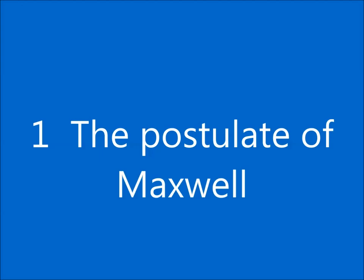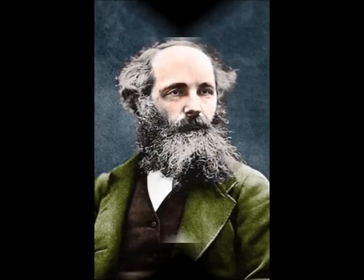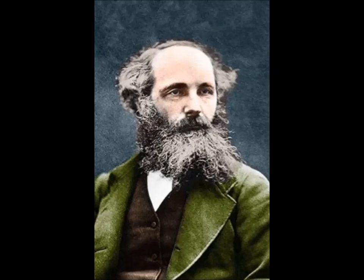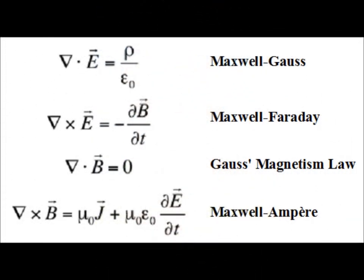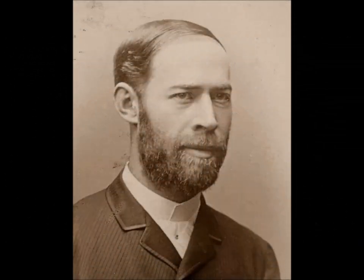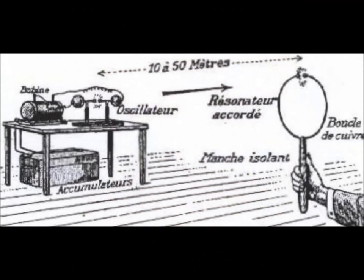The electromagnetic nature of light is a pure postulate of Maxwell. He showed that waves associated with oscillations of electric and magnetic fields propagate in a vacuum at the speed of light. Maxwell immediately thought that light is therefore electromagnetic in itself. In 1887 Hertz discovered the waves emitted by an electric circuit. These waves propagate at the speed of light. He thus confirmed Maxwell's theory.